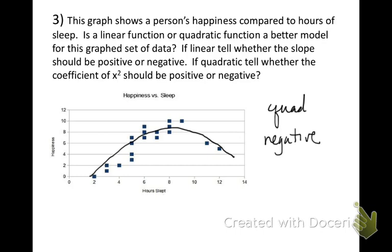For the last problem, a quadratic is the best model because if you draw a curve through the points they go up and then down, and since it's opening down the coefficient would be negative. It's an interesting graph showing happiness level according to hours slept — it makes sense that too little or too much sleep both reduce happiness. You are now ready to move on.